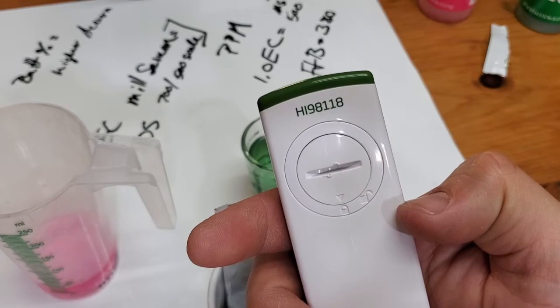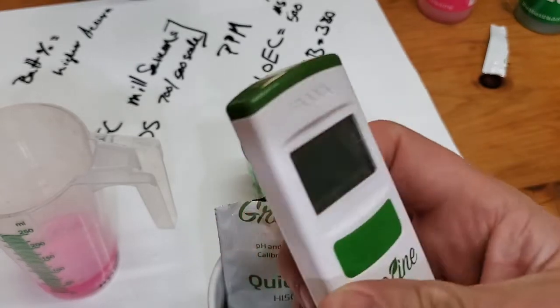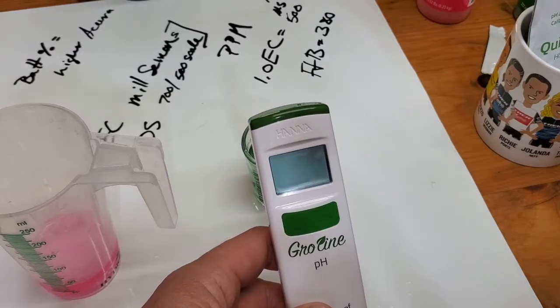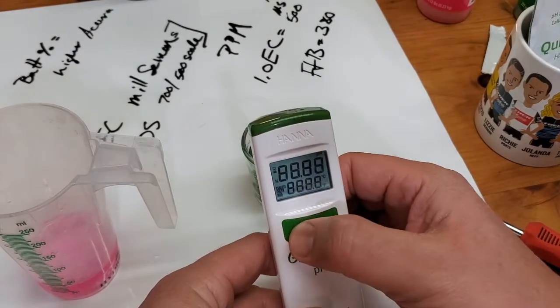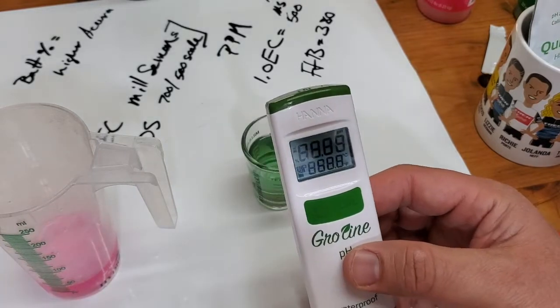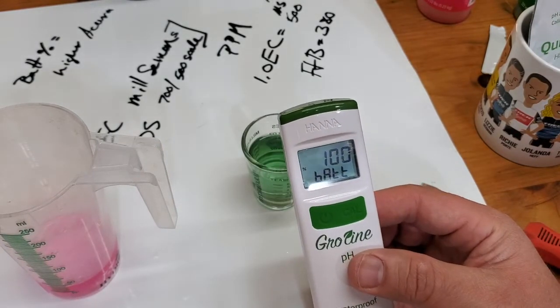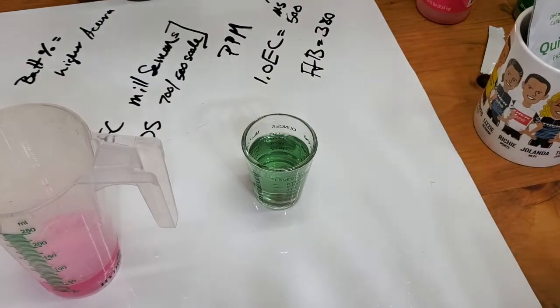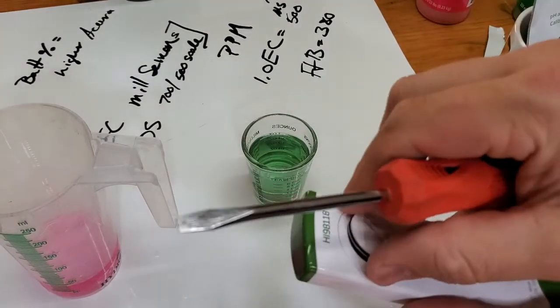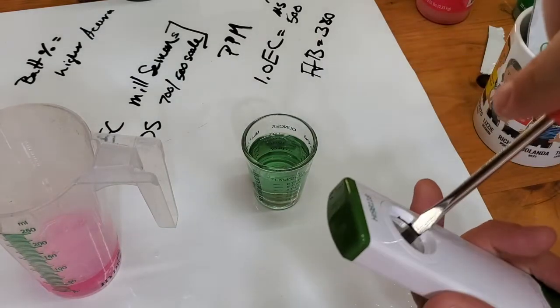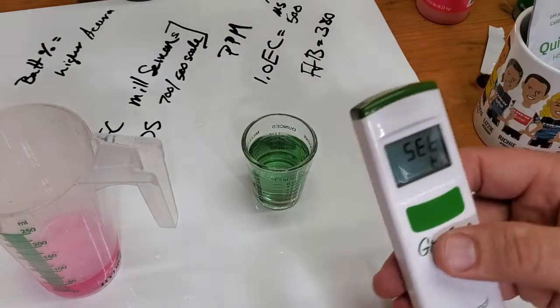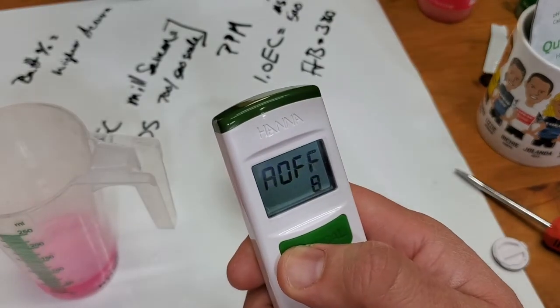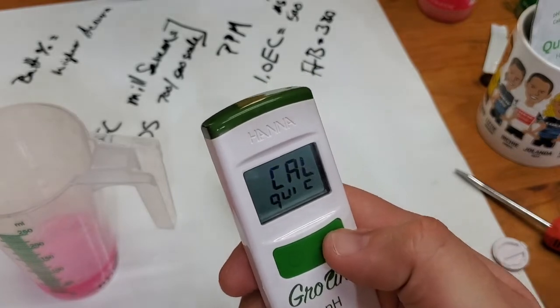All right, so we've got the 9811-8 pH pen and let's say we don't have any Quick Cal on hand and we need to do a standard calibration. We go back in, we open this up, we push the little button to get into the menu. We toggle through the Cal standard and turn it back on.